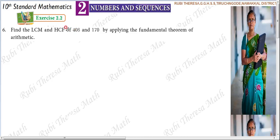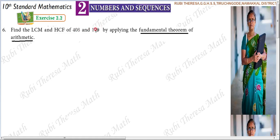Next, sixth sum, exercise 2.2, based on the Fundamental Theorem of Arithmetic. In the concept-based sums, we can find the LCM and HCF of 408 and 170. We can find these using basic methods.